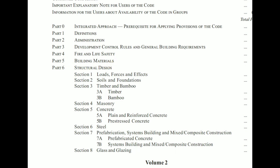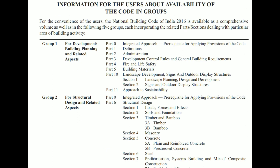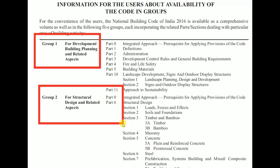If you want any other part from Volume 1 or Volume 2, please let me know in the comment box so I can upload a separate video. Now let's look at the availability of codes in groups. Group 1 is for development or building planning and related aspects — it includes Parts 0, 1, 2, 3, 4, 5, and 10. Group 2 is for structural design and related aspects — it includes Parts 0 and 6.